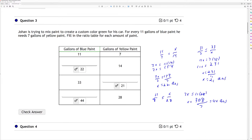Question 3. Johan is trying to mix paint, create a custom color green for his car. For every 11 gallons of blue, he needs 7 gallons of yellow. Fill in the ratio table for each amount. So the first one there, we have 11 is to 7 as x is to 14.